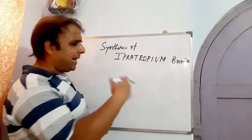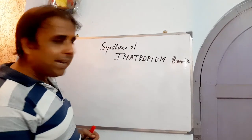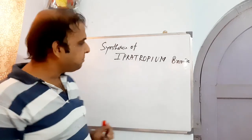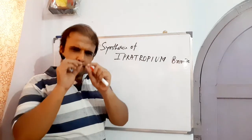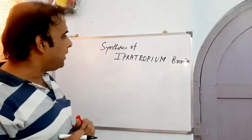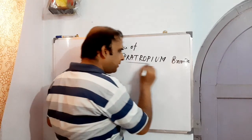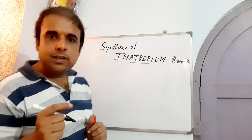We will not go to that particular aspect, rather we will just see how it can be made. The synthesis is found to be very easy, but the structure is found to be somewhat tricky at the initial stage. So Ipratropium bromide is a derivative or congener of atropine.